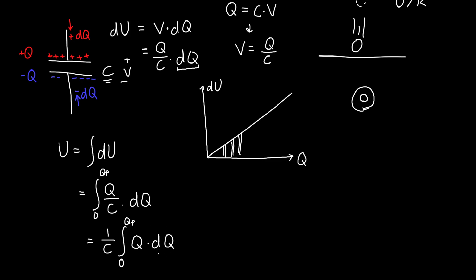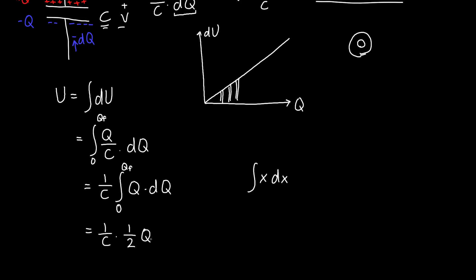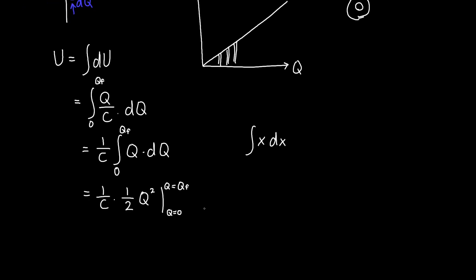But this is a fairly simple integral. So it's just the same as the integral of X DX, except I've called the variable Q instead of X. And so this is just 1 over C is our constant out front, this is just 1 half Q squared, and then we plug in Q is equal to zero and Q is equal to our final charge. And we get Q final squared over 2C.